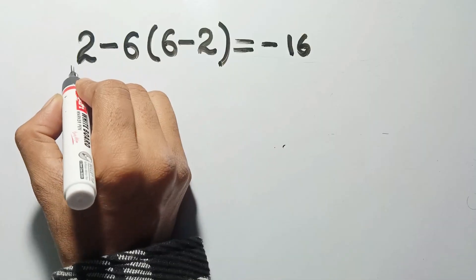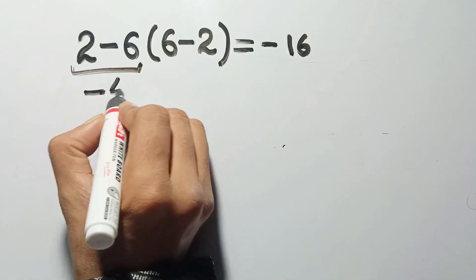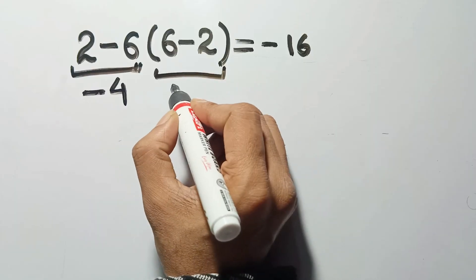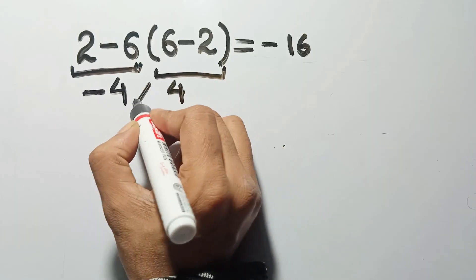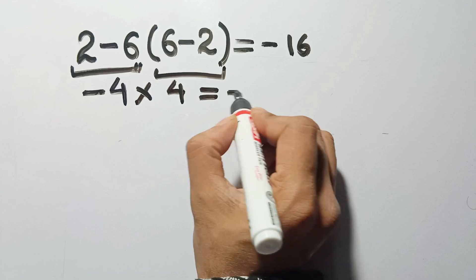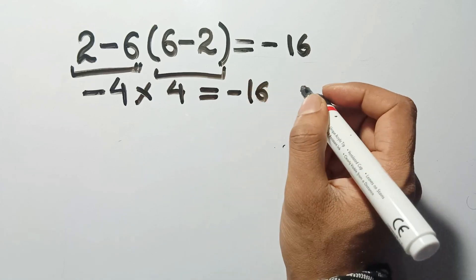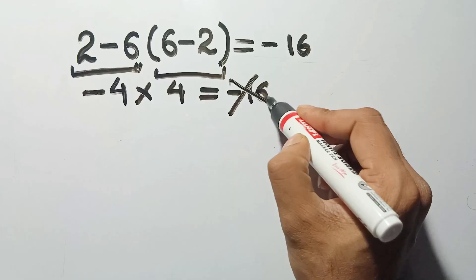They see 2 minus 6 and say that's negative 4. Then they calculate the parentheses, 6 minus 2 equals 4, and multiply it by negative 4, giving negative 16. Feels neat and fast, right? But that's the classic misstep.